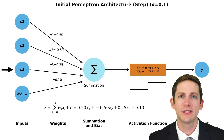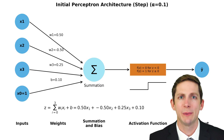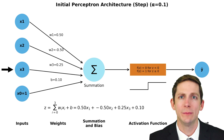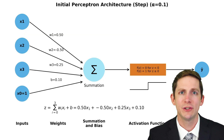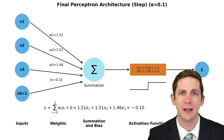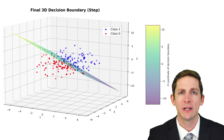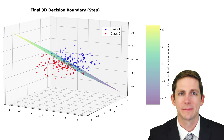If we added an x3 input, we would now be working in a three-dimensional space, but the perceptron operation would be very similar. The difference is there is now one more input term and one more weight to adjust. This allows a single perceptron to separate three-dimensional data by a plane rather than just a line. Here we have the initial values for the perceptron, the final values, and we can see that the perceptron is now able to properly classify all of the points.